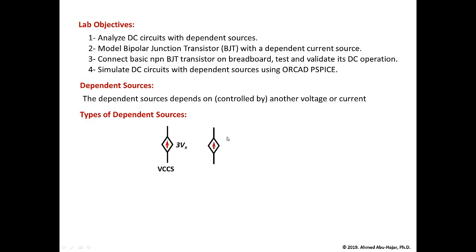Here is another dependent source whose value equals, for example, 20 times Ix, where Ix is another current in the circuit. So this current source depends on Ix. If Ix is one amp, the value of this current is going to be 20 times 2, which is 40 amps. This is called a current controlled current source — CCCS — a current source controlled by a current.